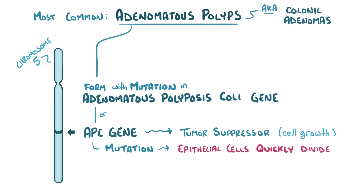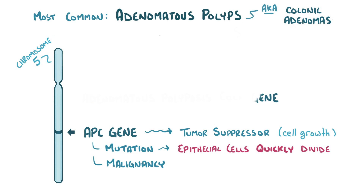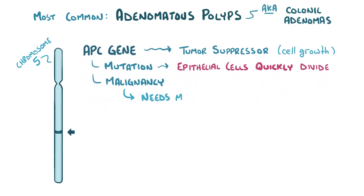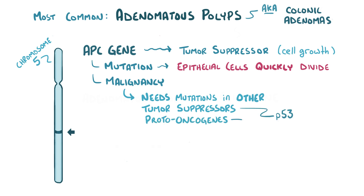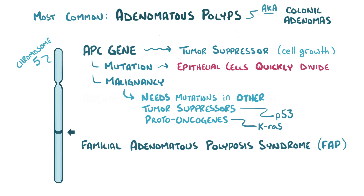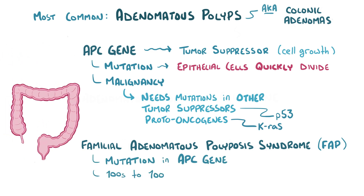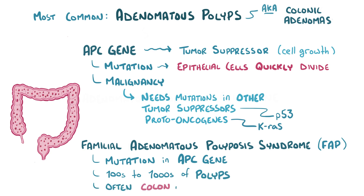Even though they're dividing, these polyps only become malignant — meaning they only invade nearby tissues — if there are additional mutations in other tumor suppressor genes like the P53 gene, or in proto-oncogenes like KRAS. Some people with a genetic condition called familial adenomatous polyposis syndrome, or FAP, are born with a mutation in their APC gene, and they end up developing hundreds or even thousands of polyps in their colon. These people often need to have their entire colon surgically removed, because having so many polyps increases the chance that one cell among all of those polyps will develop another mutation and become malignant.